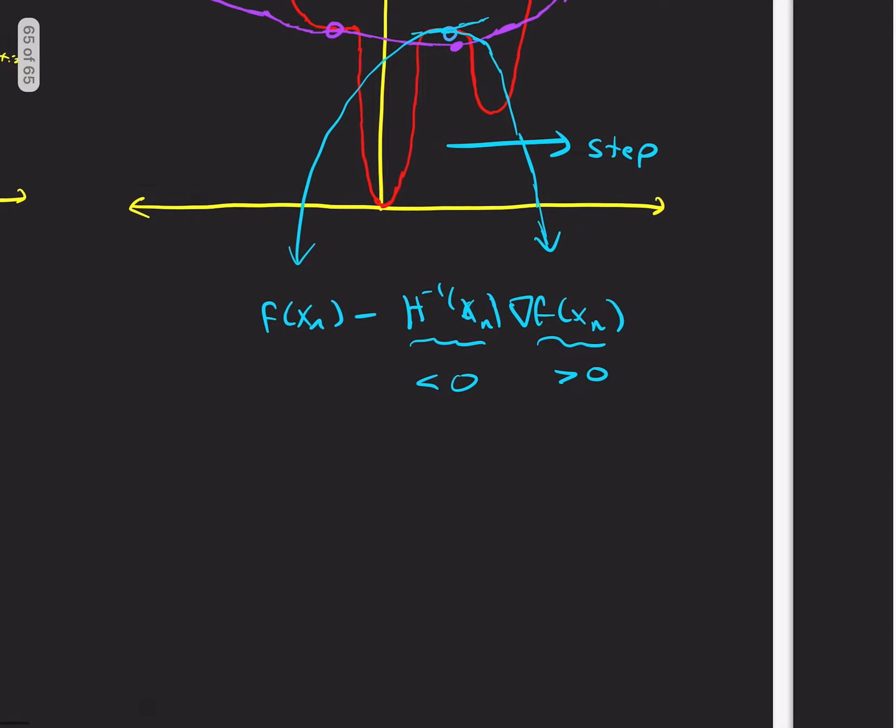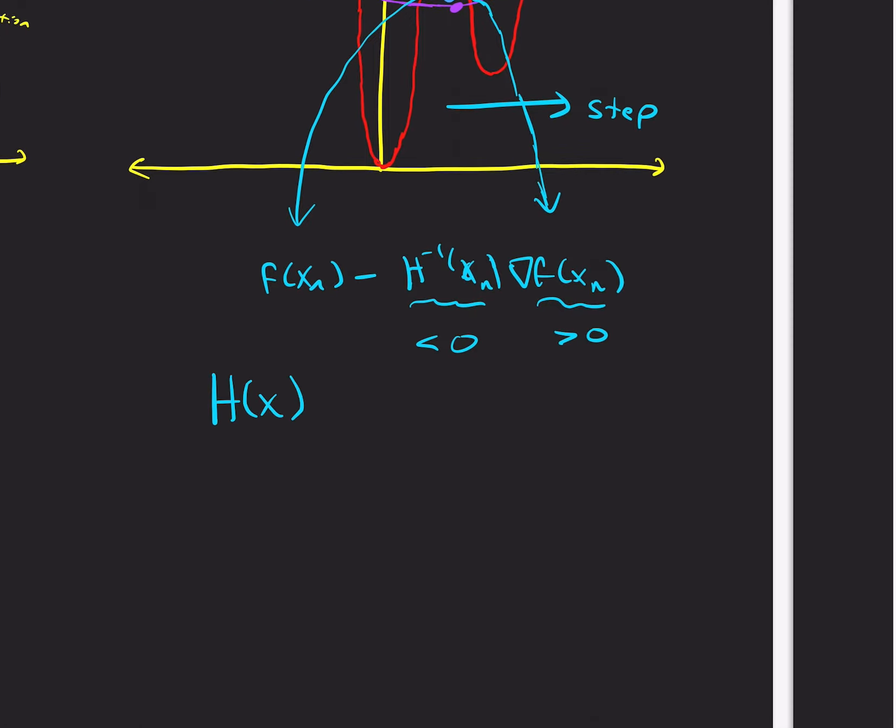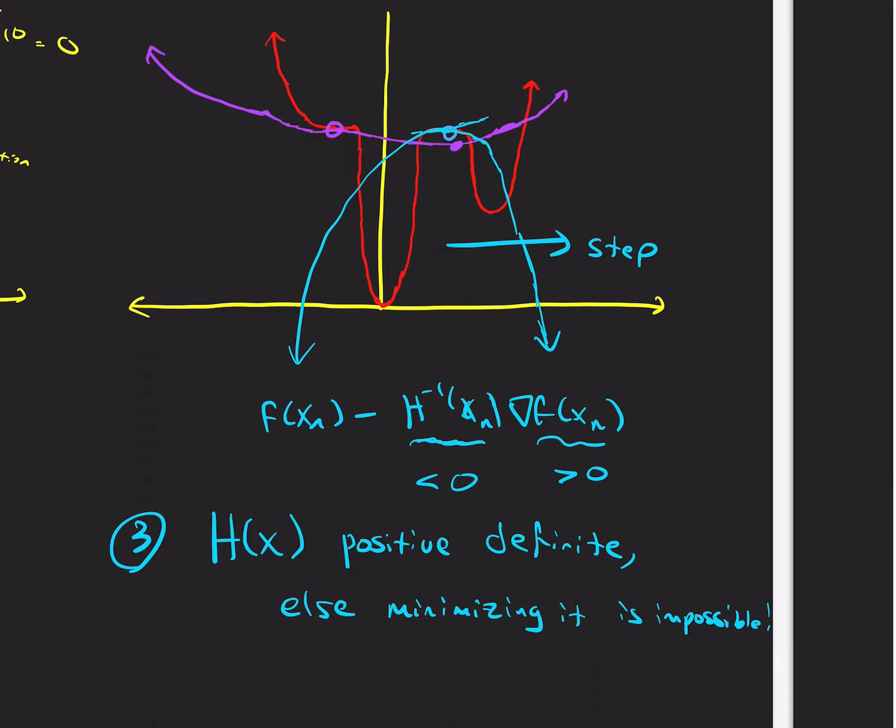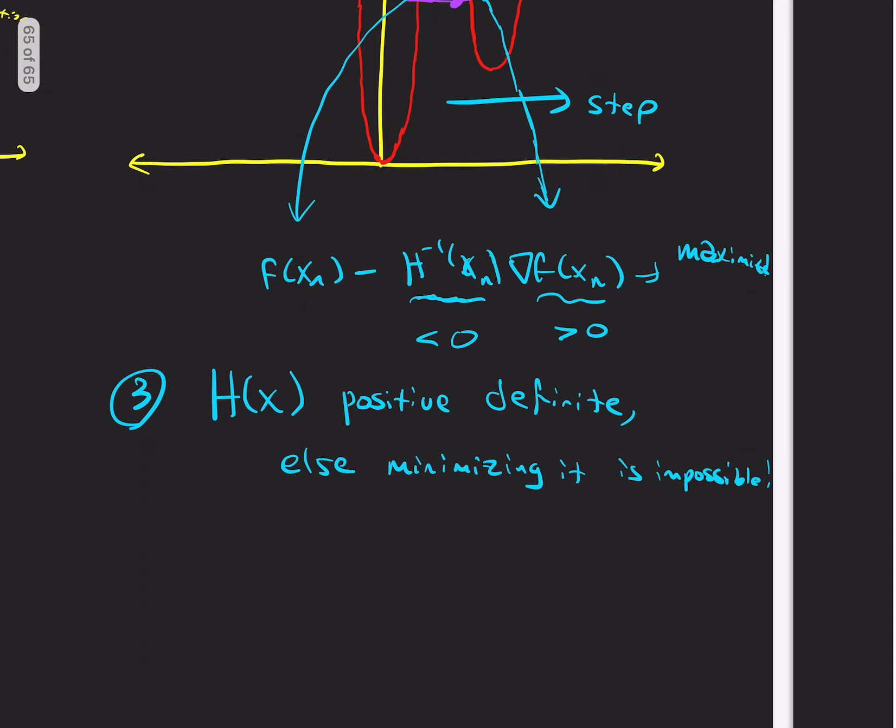And so the whole, it's very important. So another big takeaway, we want h of x to be positive definite. So really what we're doing here is we're actually, this is actually corresponding to a maximum. Right, we're maximizing the local quadratic.